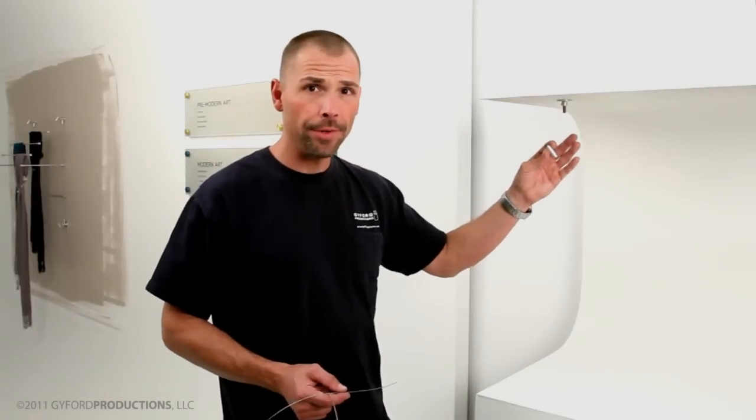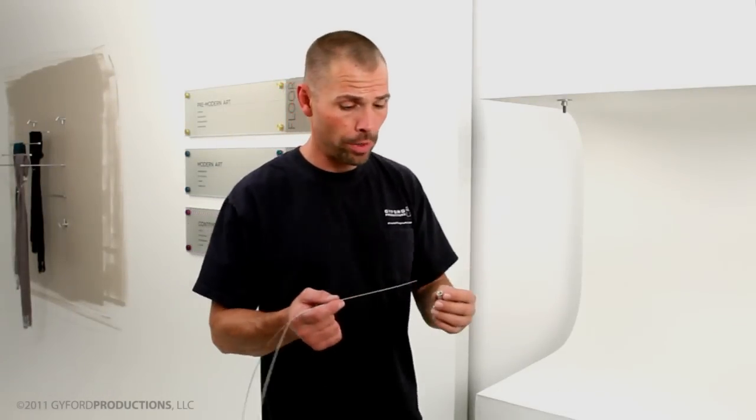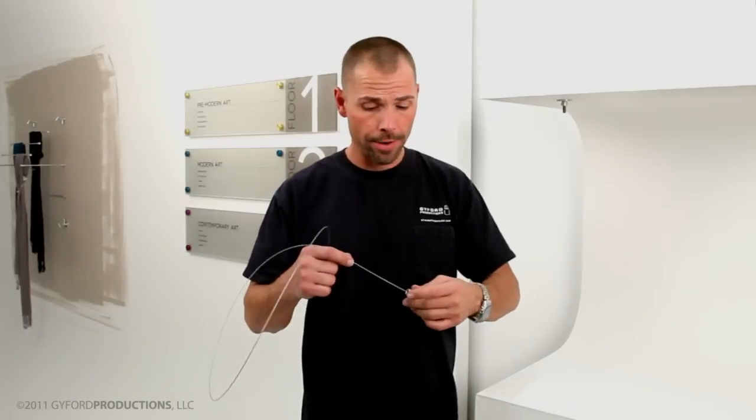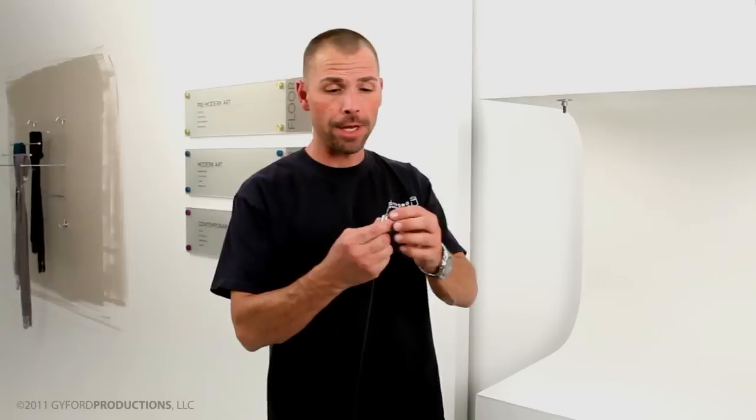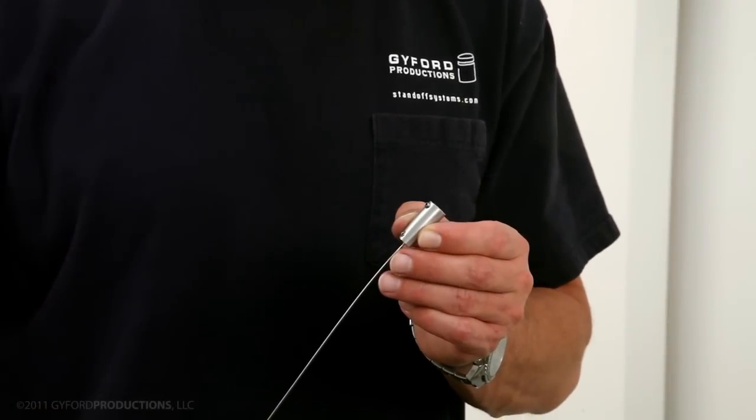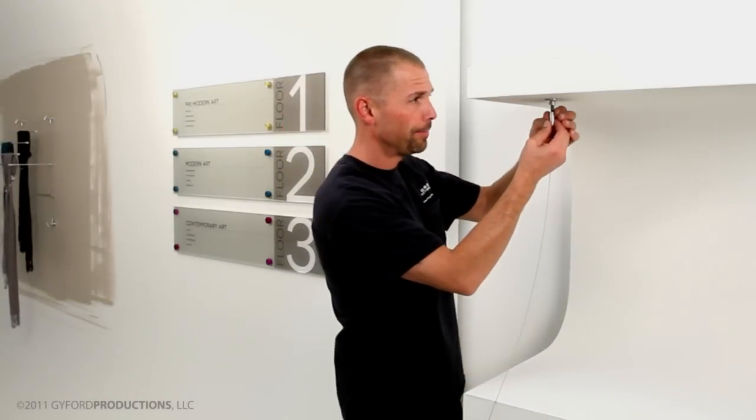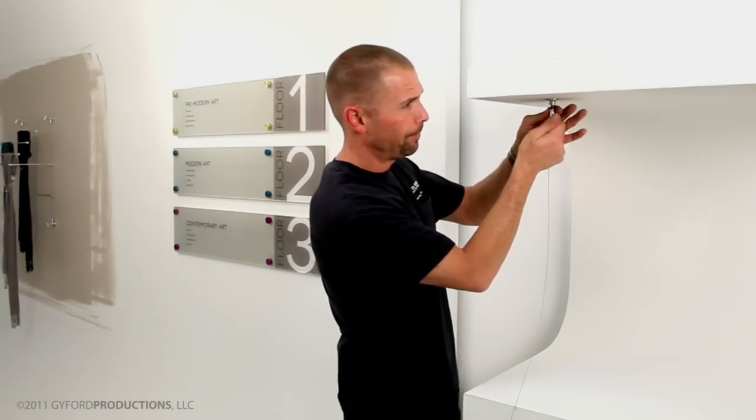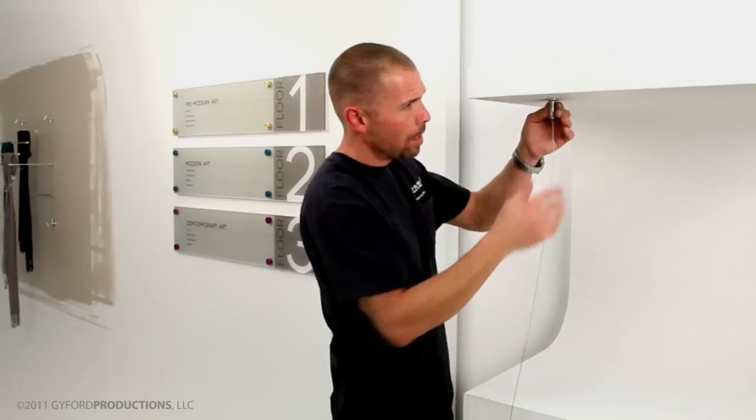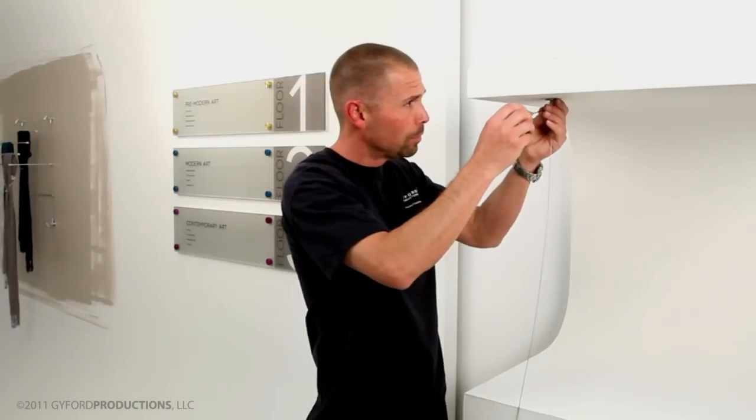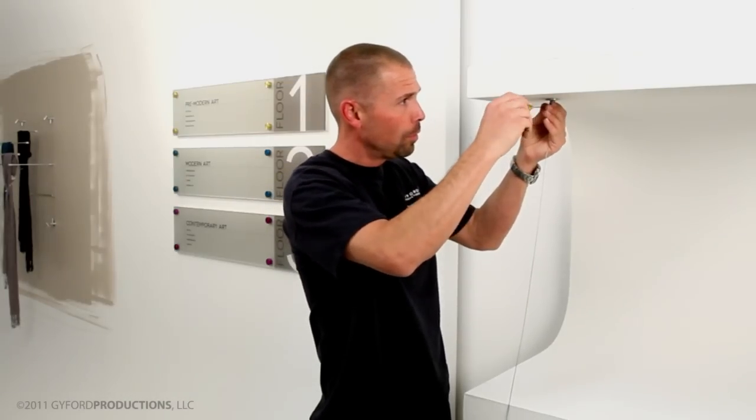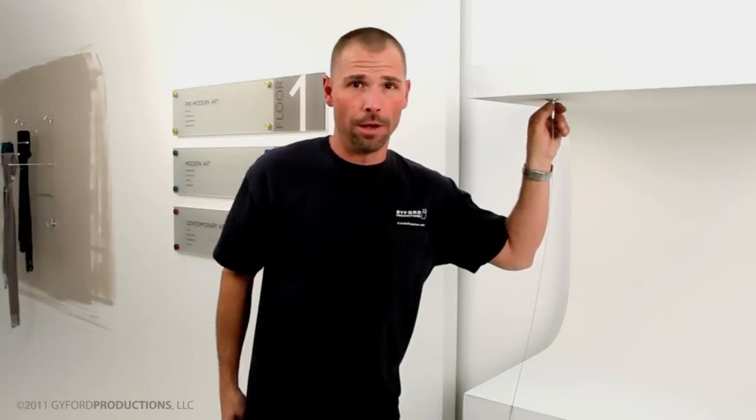So in this case, we already have the top mount in place, and we're going to begin by threading the wire through. It'll stop at the swaged steel ball, and we'll simply thread it on. When that's complete, set the set screw to avoid having it unscrew.